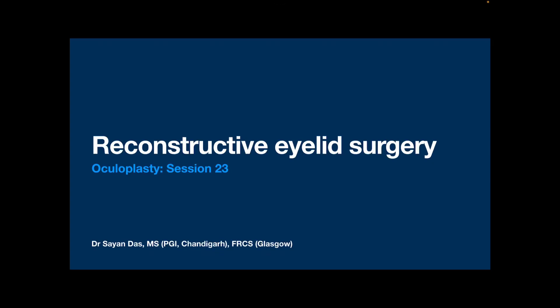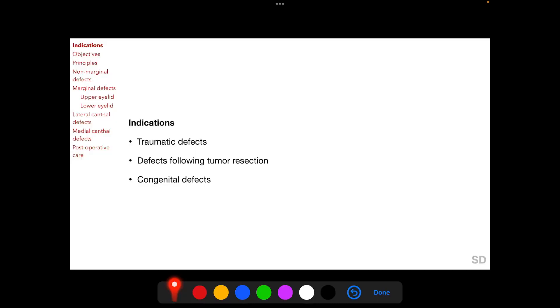Eyelid defects with tissue loss require reconstructive eyelid surgery to protect the underlying globe. In this session, we will be discussing the principles of reconstructive eyelid surgery and the surgical techniques available for the various patterns and extents of eyelid defects with tissue loss. Tissue loss of the eyelid for which reconstructive eyelid surgery may be required can occur following eyelid trauma, following resection of an eyelid tumor, or may occur congenitally.